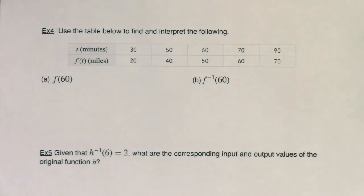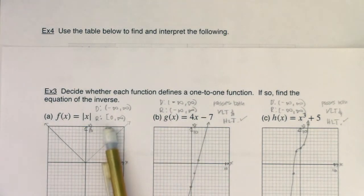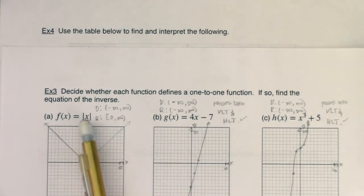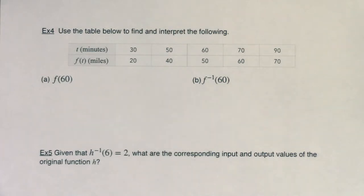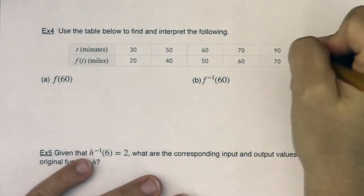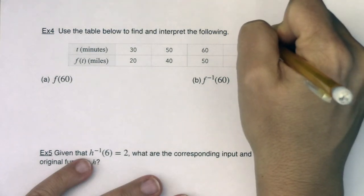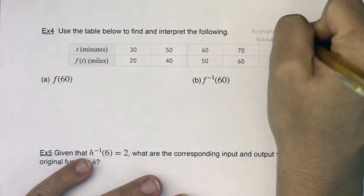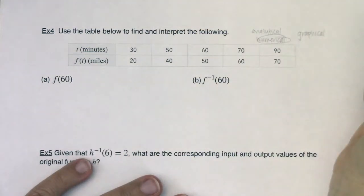We've been seeing these three themes pop up many times. We've got this analytical approach to inverses, where I actually give you functions to analyze. We have this numerical approach to inverses, where I give you tables to analyze. And when we get down to example six, we will only have a graph — the graphical approach to inverses. So we're always attacking things through these three lenses: the analytical side, the numerical side, and the graphical side. This particular example, example four, is the numerical version.